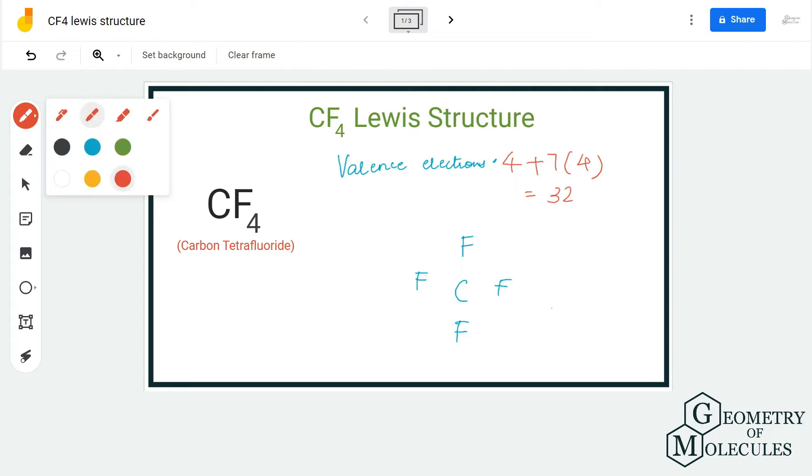Carbon will take the central position because it is less electronegative than fluorine. Fluorine atoms will go around the carbon atom, so we place the carbon atom in the center and all the fluorine atoms around it.